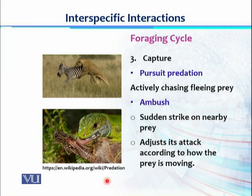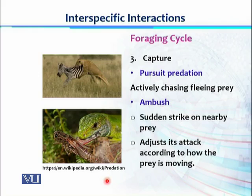Ambush is another capture strategy. The predator hides itself, sits and waits, and once the prey is approaching, it assesses the prey's direction of movement and speed, then attacks according to those assessments. That attack is very sudden — it is just an ambush strike. For example, snakes attack their prey with an ambush strike.